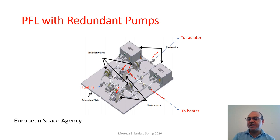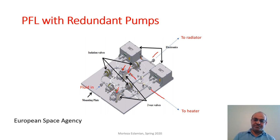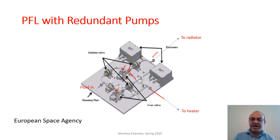However, if it's daytime or if there is a lot of heat to reject and the temperature is higher than the set point, the fluid will be directed toward the radiator to reject heat. Electronic boxes control this process — because this is an active system, the three-way valve, the pump itself, and the sensors are all powered, and electronics control the entire process.